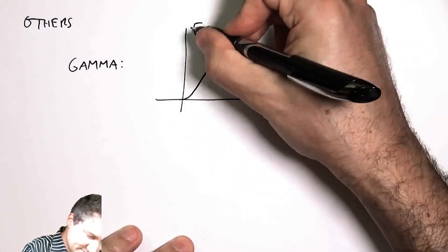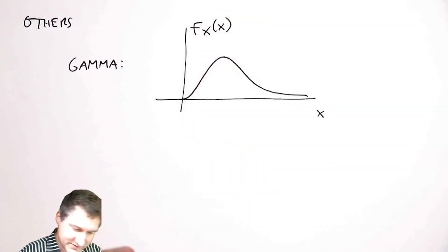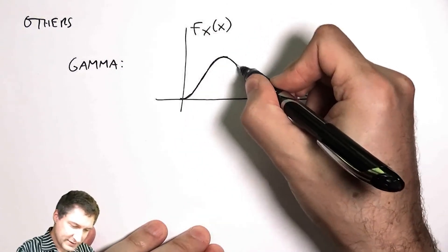I'm not going to write down the formula because it's complicated and you're not going to learn that much from it, but you can basically get these kinds of humps that have a rise to a point and then taper off slowly.